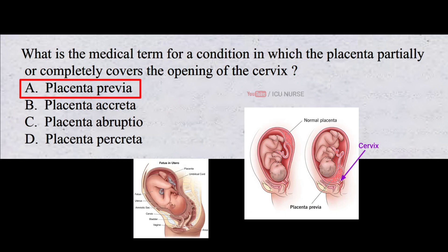Placenta previa is a condition where the placenta is located low in the uterus and covers part or all of the cervix. This can cause bleeding during pregnancy and can be dangerous for both the mother and the baby.